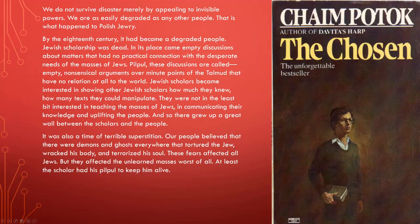The best example of Pilpul, or the best introduction, is an example from Haim Potok's The Chosen. It's a book written in the World War II period about a modern orthodox kid, Ruvane Malter, who becomes friends with this Hasidic kid, Danny Saunders. It's sort of the interplay between the more modern orthodox and the Hasidic world.